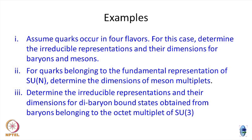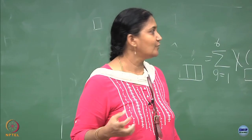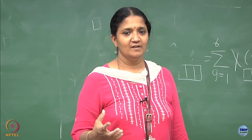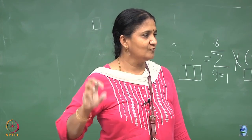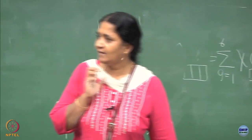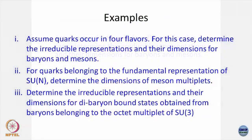We will start by letting the quarks have not just 3 flavors but 4 flavors: up, down, strange, and charm. This is extrapolating from SU(2) and SU(3) to SU(4). The fundamental objects which you can put on a single box will be either up, down, strange, or charm. So, assuming quarks occur in 4 flavors, determine the irreducible representations and the dimensions of baryons and mesons.